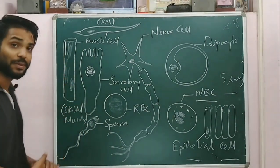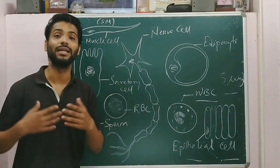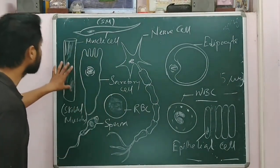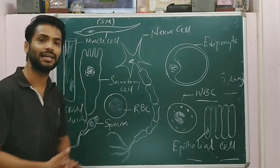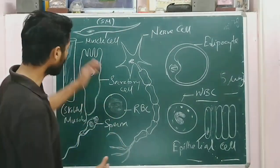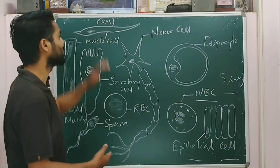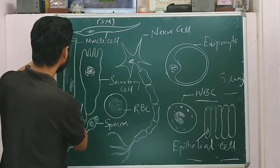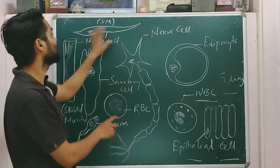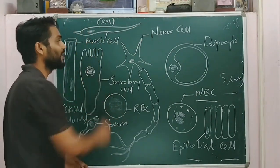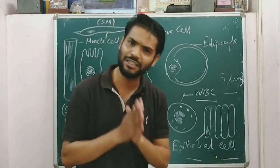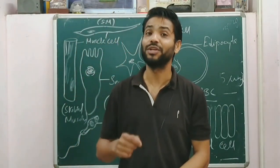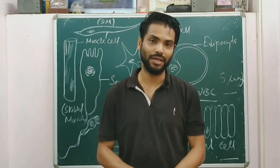A cell with a special function allows us to move — our brain gives instructions to the cells, and accordingly they contract and relax so our hands can move. Looking at smooth muscles, you can see both ends are pointed here, and here both ends are kind of blunt. These types of cells are responsible for a special function in our body which we cannot voluntarily control.